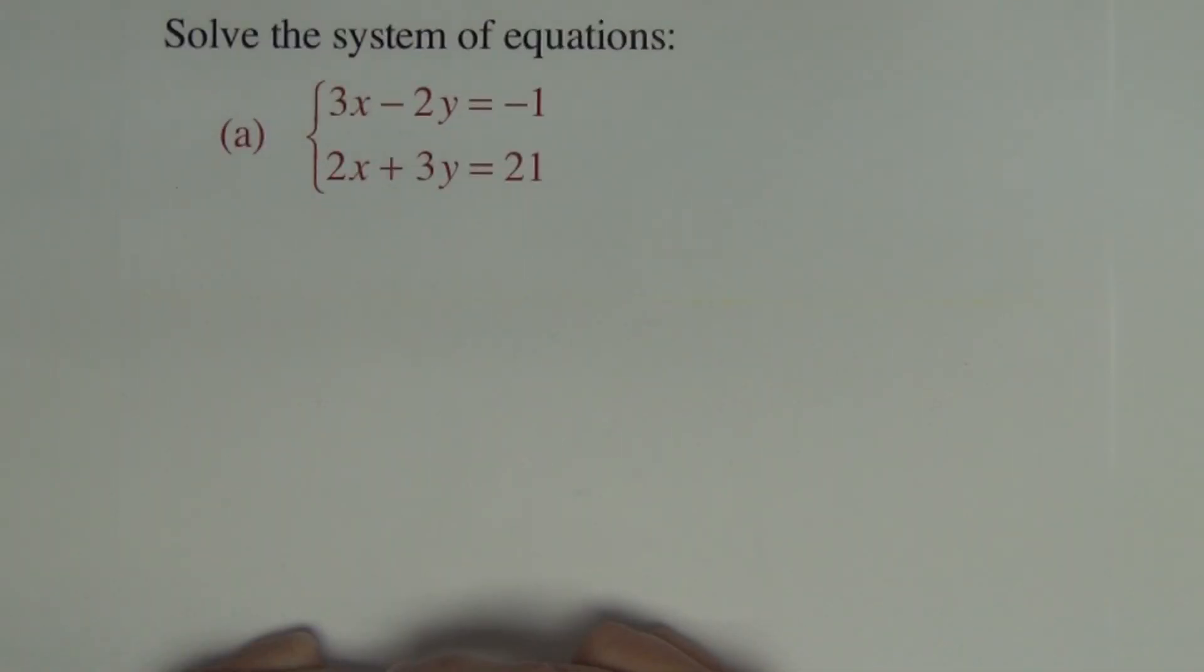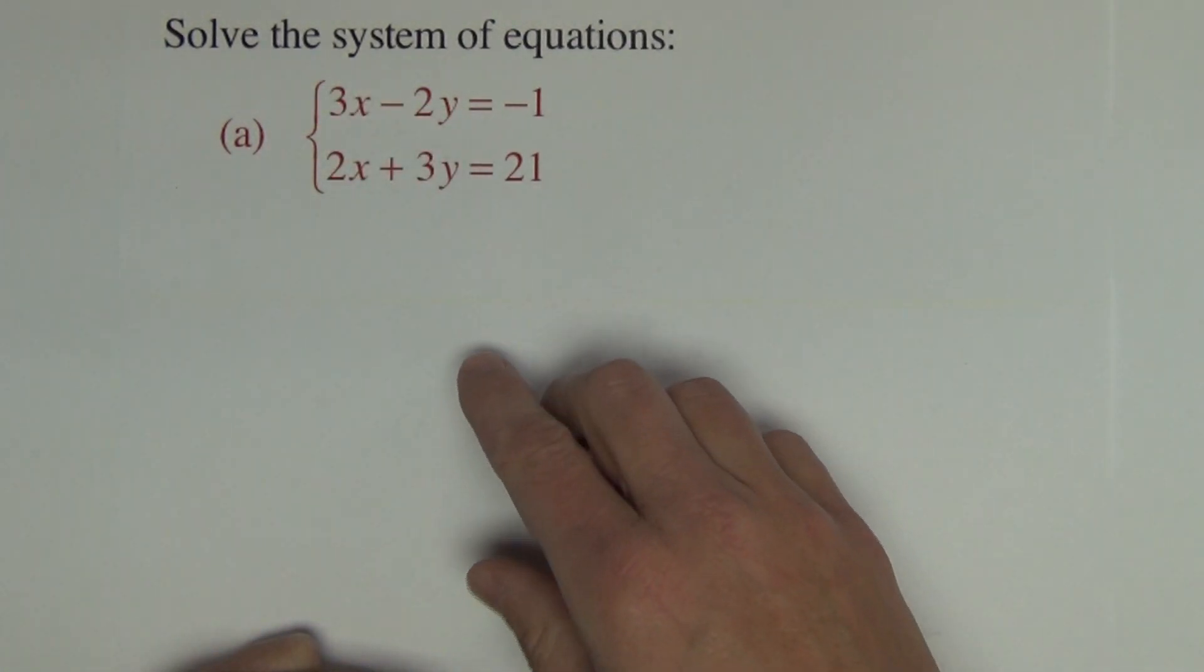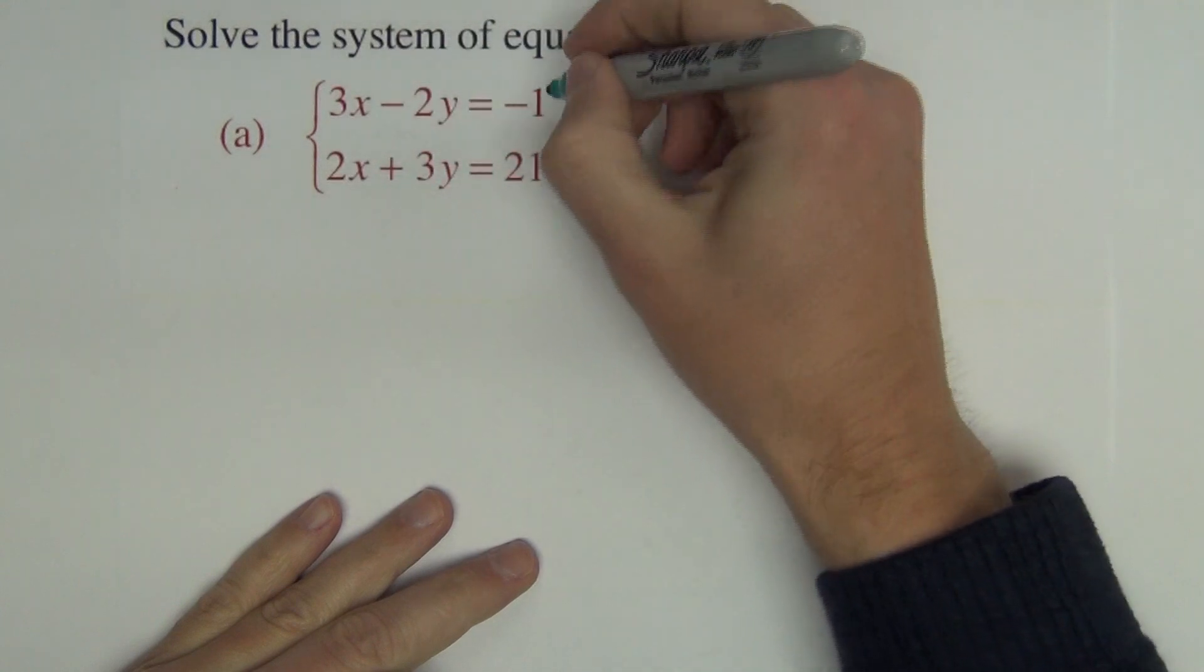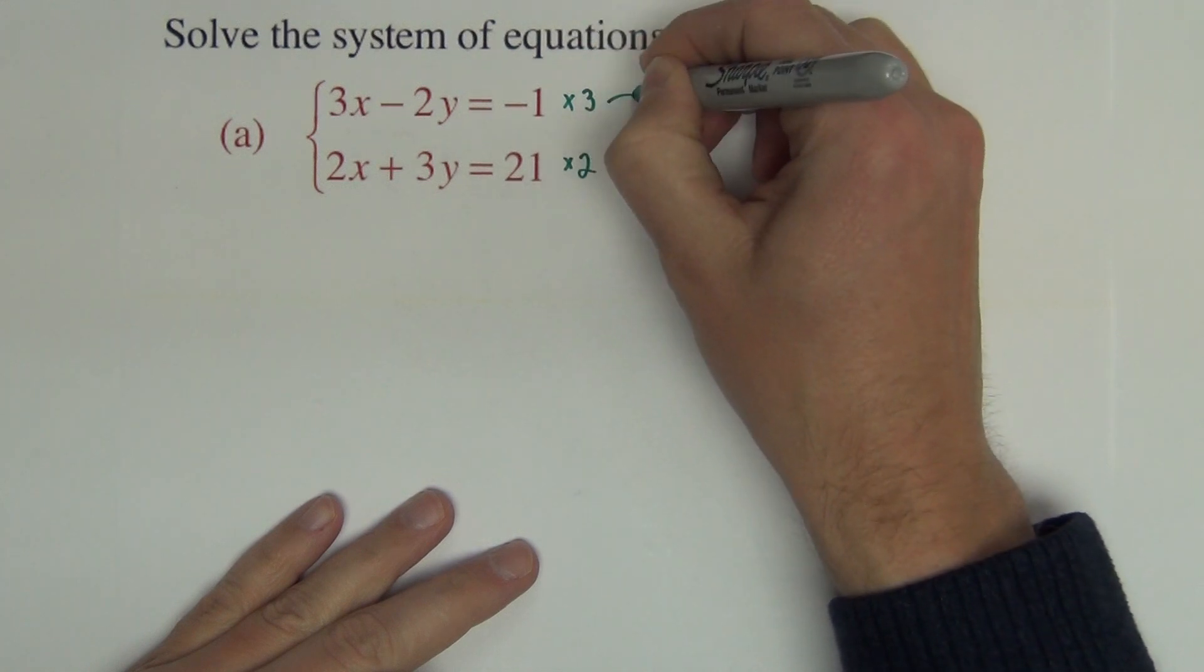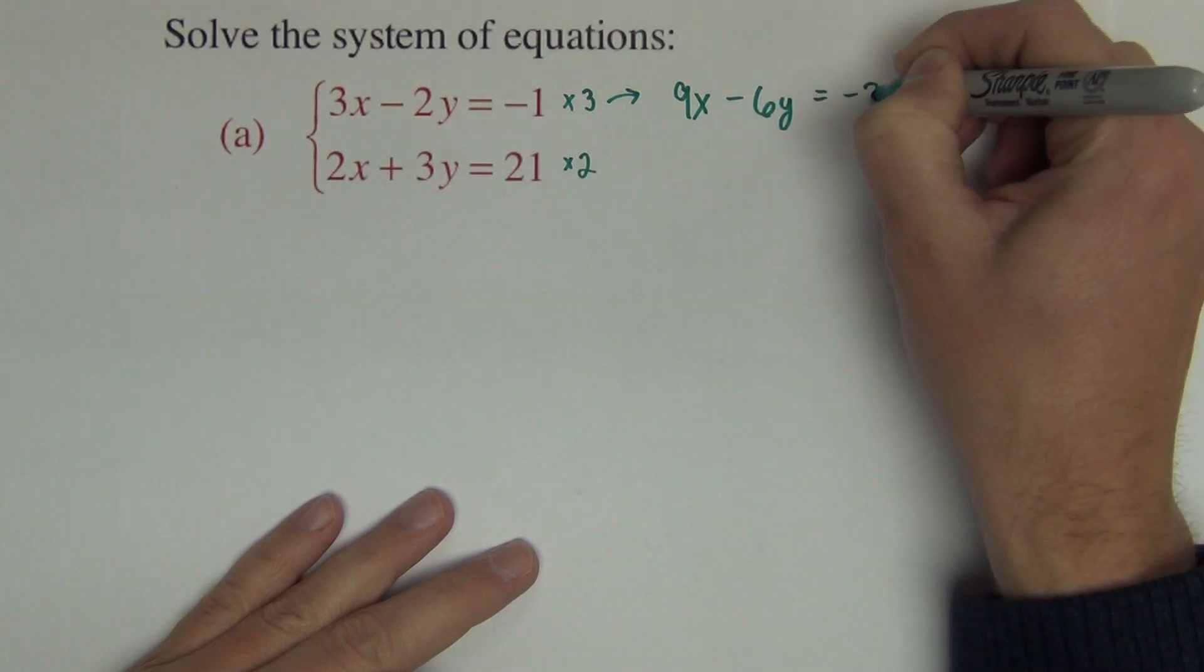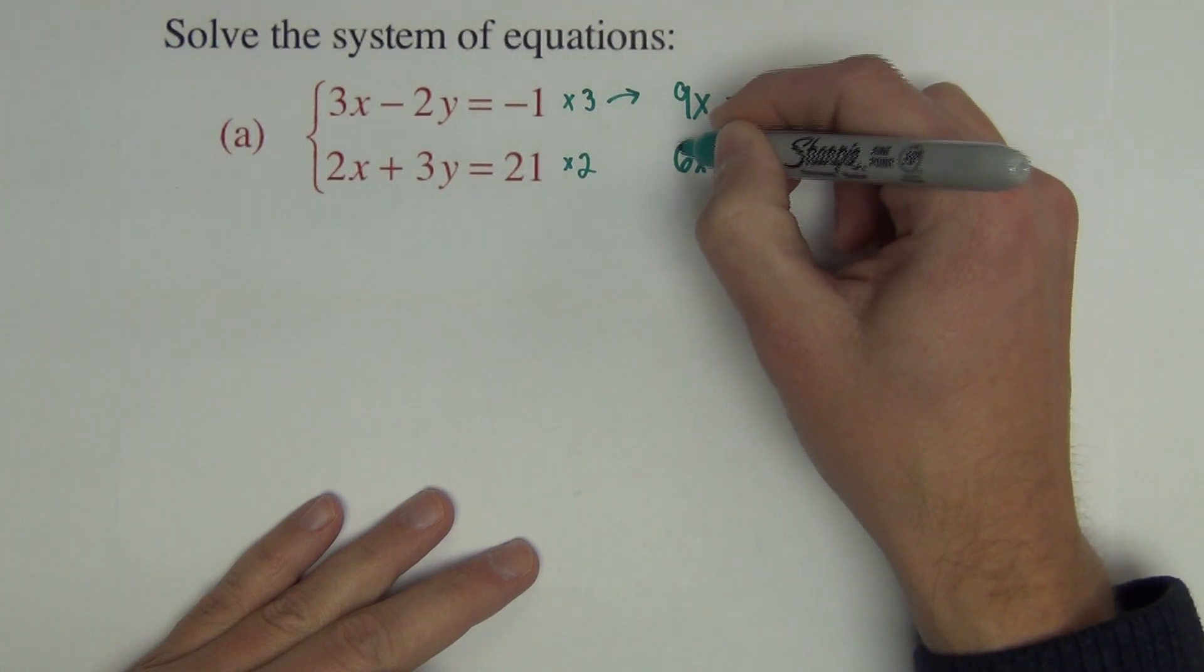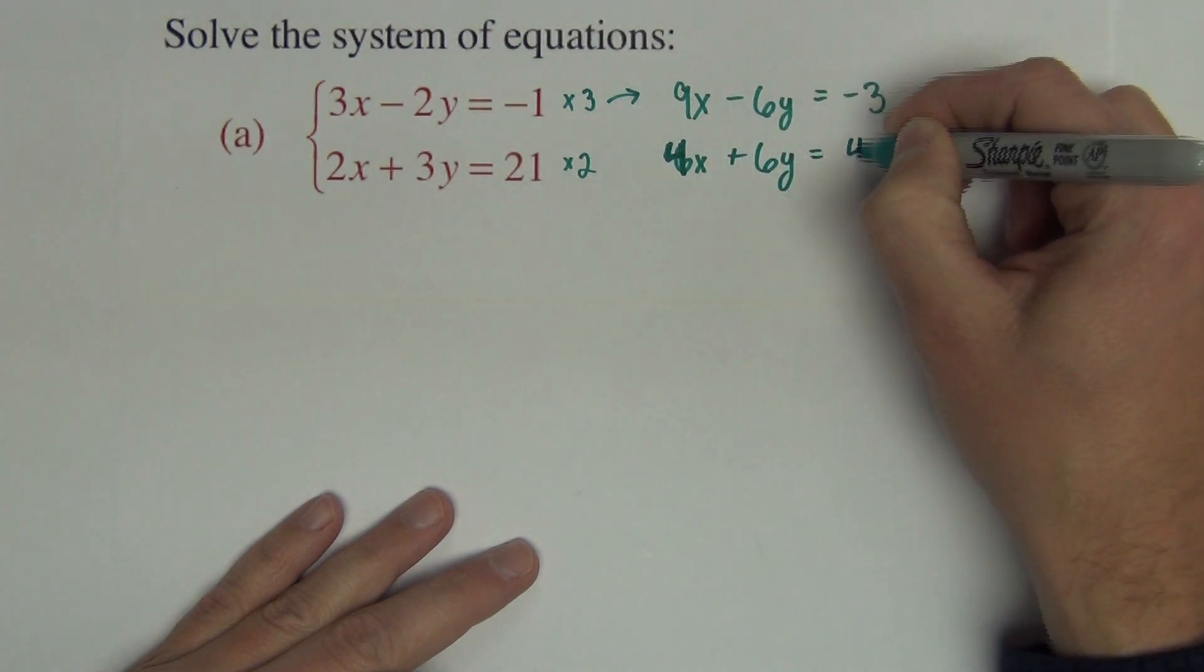Okay, this system of equations, it's not designed to do substitution very easily because we don't have a single variable that's solved for very easily, at least without creating fractions. So what I'm going to do is create multiples of these equations so I can do elimination method. I'm going to take this equation times 3 and this equation times 2, the whole thing. So that would get 9x minus 6y equals negative 3. And I would get 4x plus 6y equals 42.